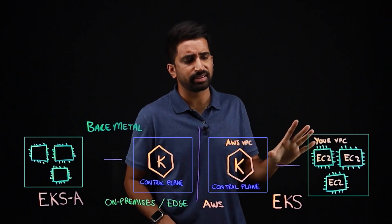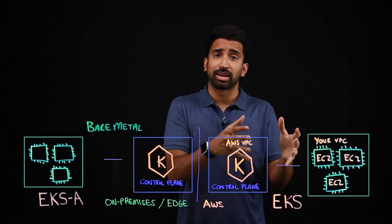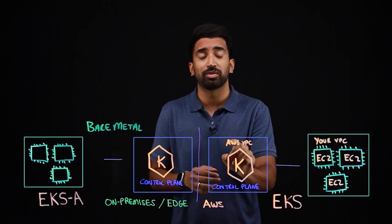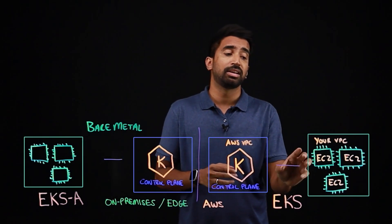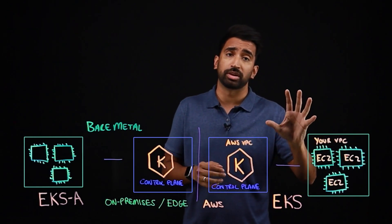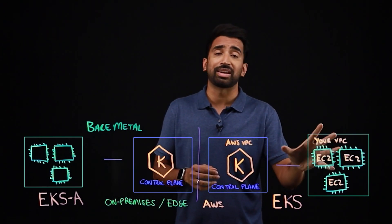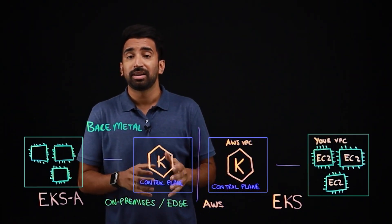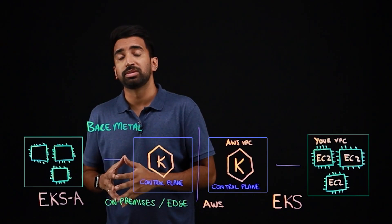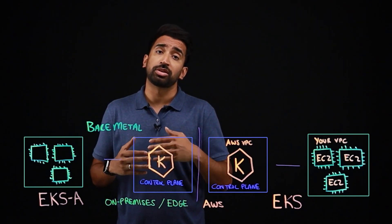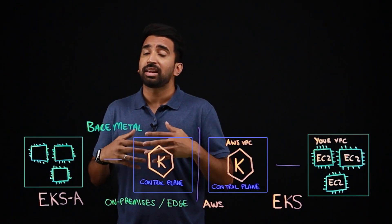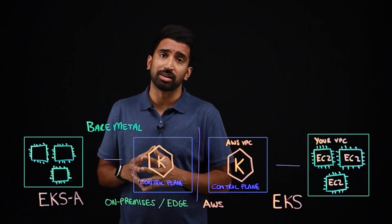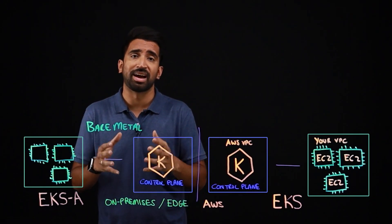But how exactly does this work? Looking at EKS on AWS public cloud, you'll notice that the control plane is managed for you, running in an AWS VPC. You're responsible for your container workloads, in this case running on EC2 within your VPC. Now with EKS Anywhere, the control plane, worker nodes, and the underlying infrastructure are all managed by you. EKS Anywhere provides an integrated set of tooling based on open source technologies to help you do just that.